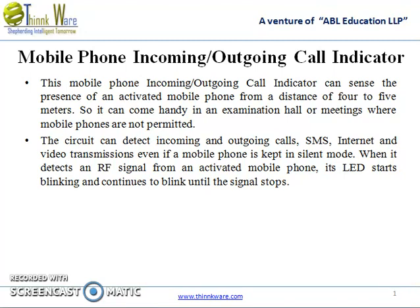This mobile phone incoming or outgoing call indicator can sense the presence of an activated mobile phone from a distance of 4 to 5 meters, so it can come in handy in an examination hall or meetings where mobile phones are not permitted.